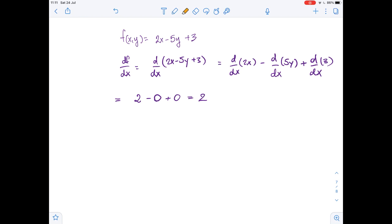We have found one of the first partial derivatives of f with respect to x. Now, let's differentiate f with respect to y. We get that this equals the derivative of 2x minus 5y plus 3 with respect to y.